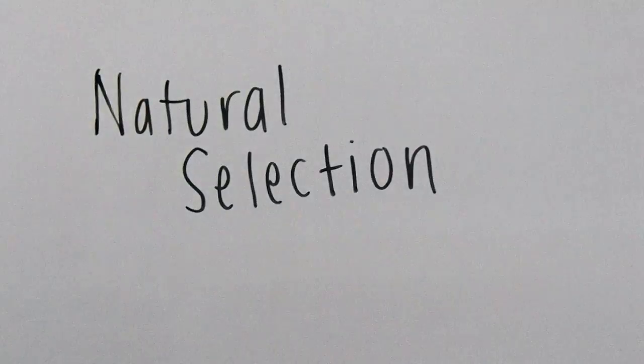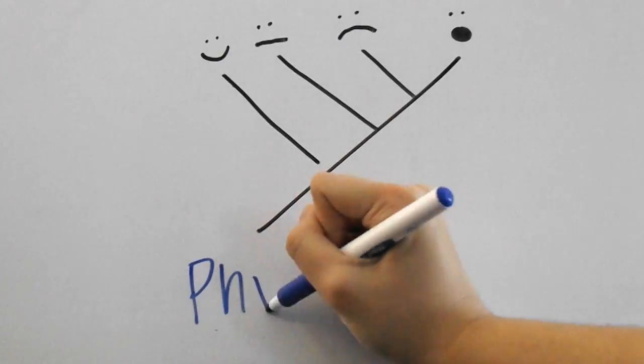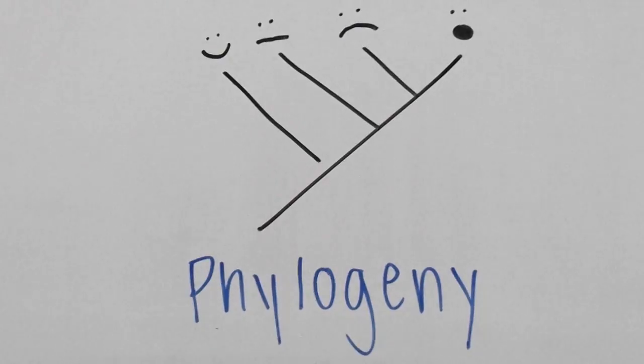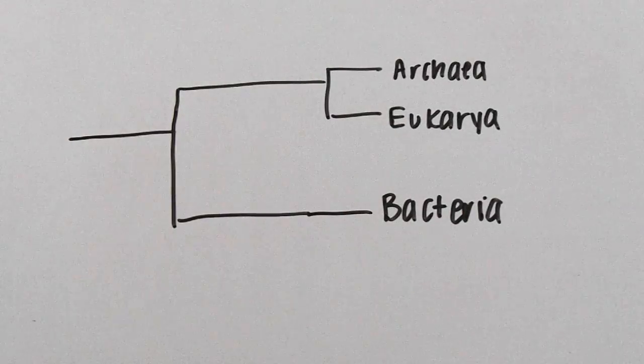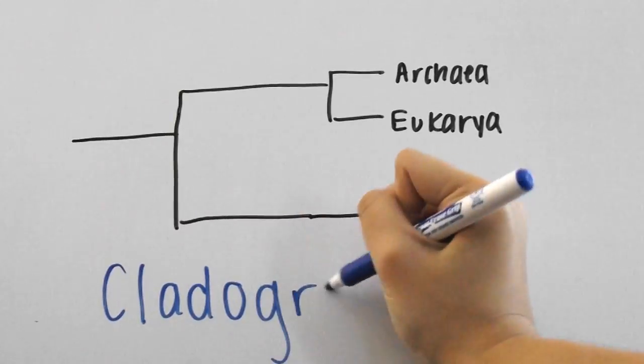Another important thing we'll be looking at is the evolutionary relationships between organisms, as shown through the graphical representations called phylogenetic trees and cladograms. Evolution can be driven by random processes too, and we'll get into more of that in a future video.